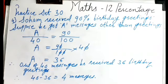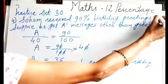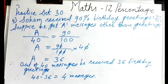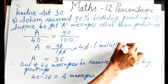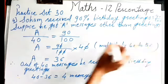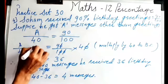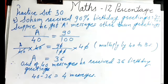To recap: Soham received 90% birthday greetings, meaning 90 of 100. Suppose he got A messages other than greetings. Out of 40, A is equal to 90 of 100 — multiply both sides by 40, the 40s cancel, and we get A equals 36. So out of 40 messages, he got 36 as birthday greetings. Subtracting: 40 minus 36 gives 4 messages.